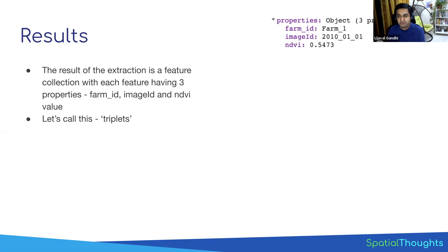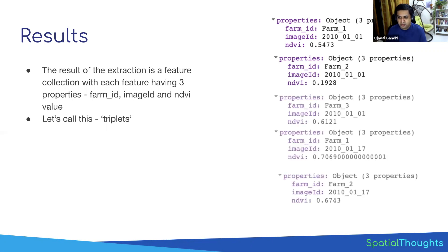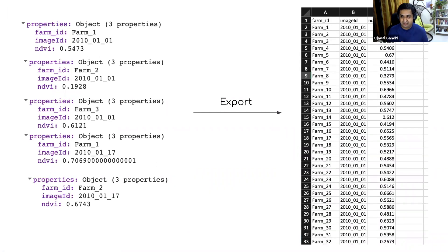Once flattened, each feature will have the image ID that the data was extracted from, the NDVI value itself, and the point ID — here we're calling it the farm ID. So you'll get these triplets. If you had 100 points and one year, that would be around 2,300 rows. For example, at farm one, the NDVI value was 0.5073; at farm two at that same image, the NDVI value was different, and so on across all farms and all images.